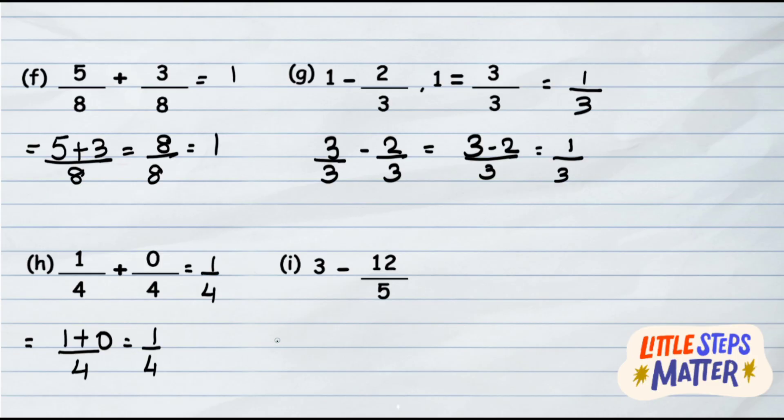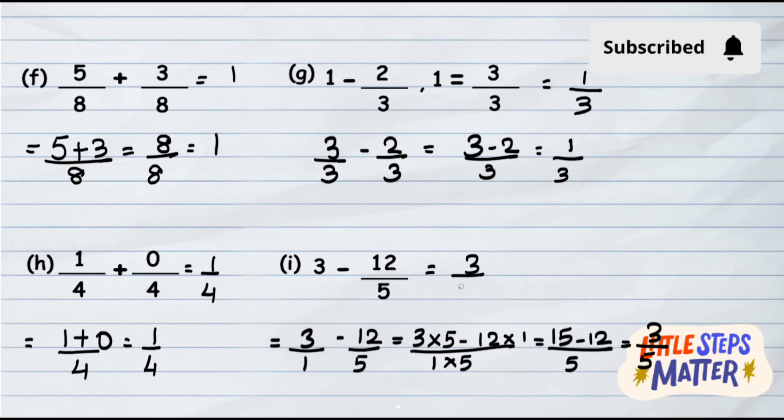The last question might feel tricky. Here only one digit is given. As I explained in earlier videos, when the whole number is written that means it is in the numerator and the denominator will be 1. So it's 3 upon 1 minus 12 upon 5. Denominators are not same, so use cross multiplication. It will be 3 into 5 minus 12 into 1 upon 1 into 5, which gives you 15 minus 12 upon 5. 15 minus 12 gives you 3 upon 5.